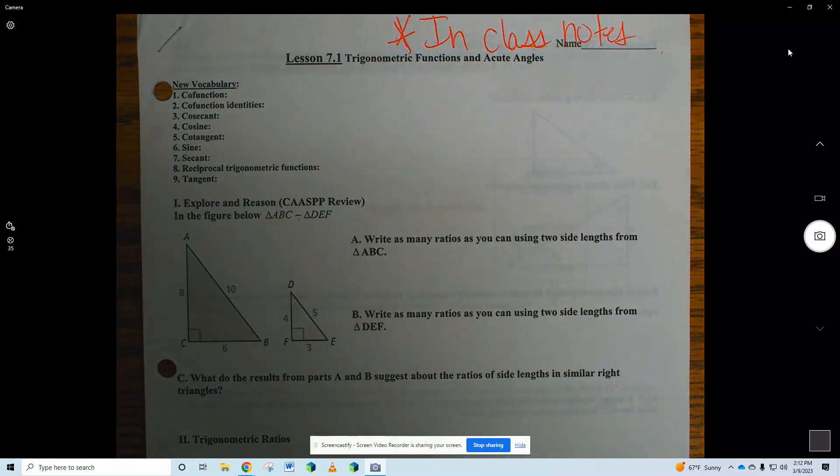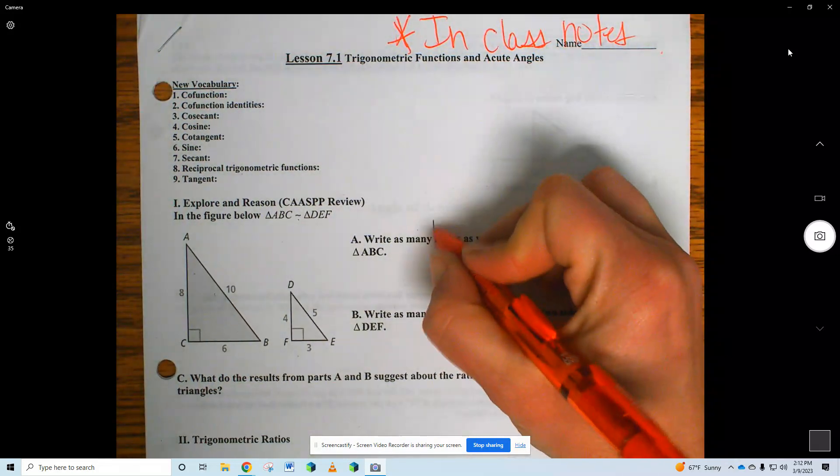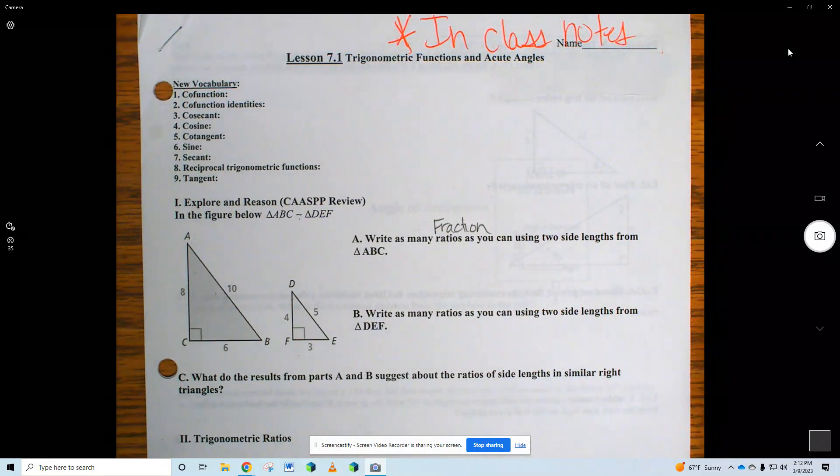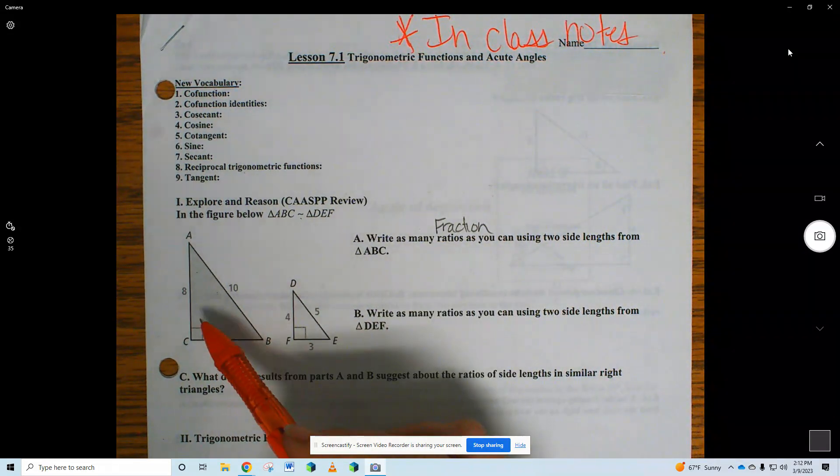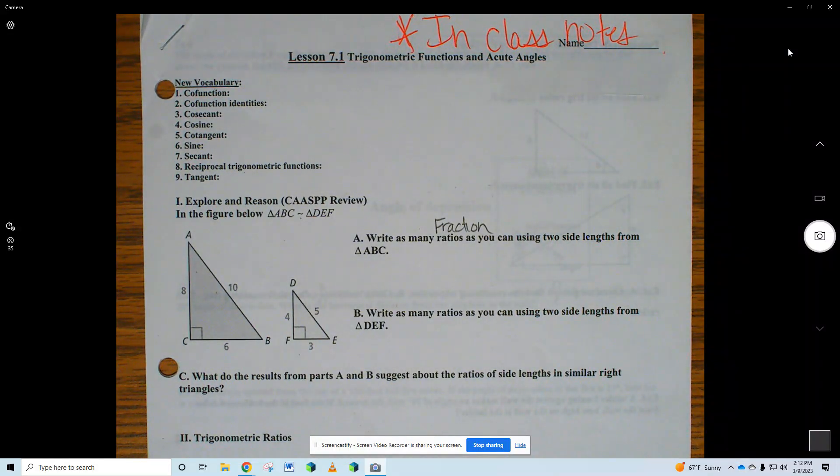Write as many ratios as you can using two of the side lengths from ABC. I want you to write a fraction. That's what a ratio is. I want you to write a fraction using two numbers of only this first triangle, ABC. So go ahead. Spend 30 seconds. That's all the time I can give you. So you're writing fractional ratios that compare two sides. You could go like, 8 over 10. That's one example of something that you could write right now. I want all fractions, as many as you can think of.